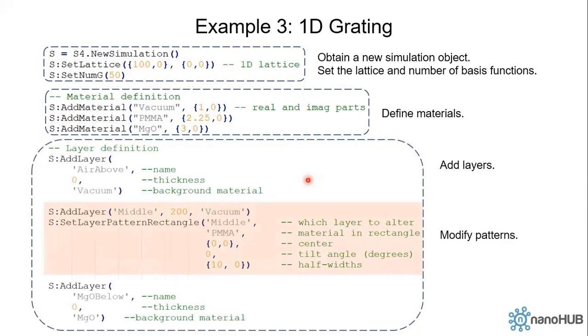We define the layers. The top layer is semi-infinite vacuum, the bottom layer is semi-infinite magnesium oxide. What's most interesting about this example is the middle layer. We first define a vacuum layer, and then we call the function SetLayerPatternRectangle to set a rectangular pattern.